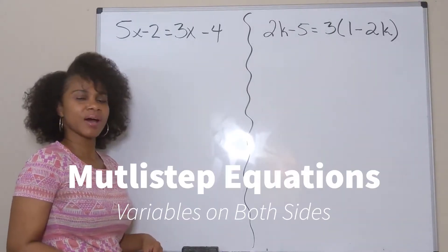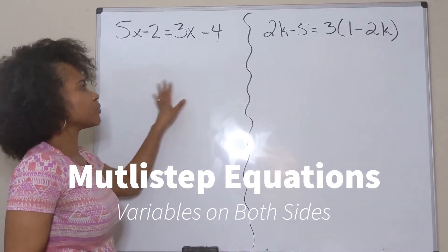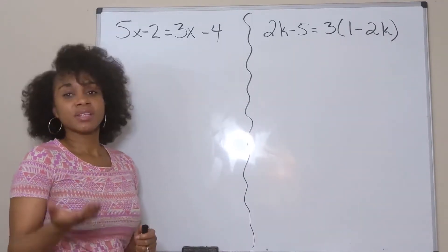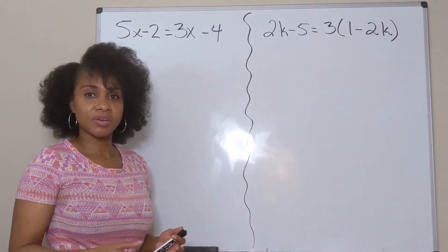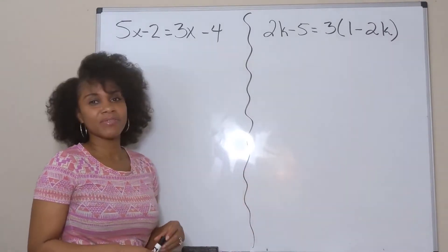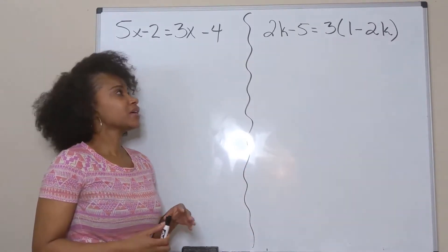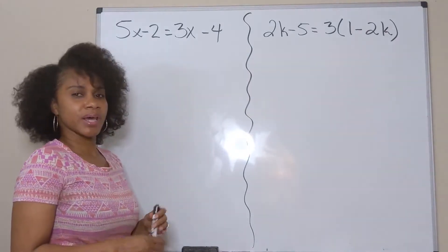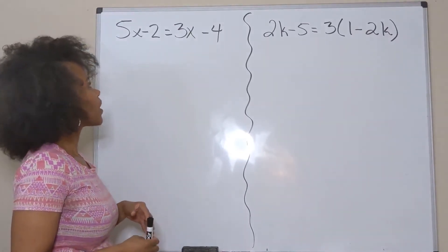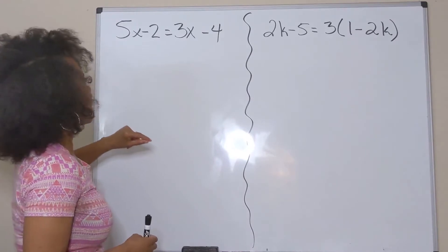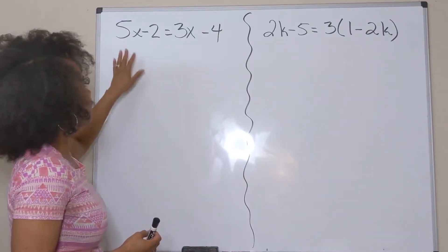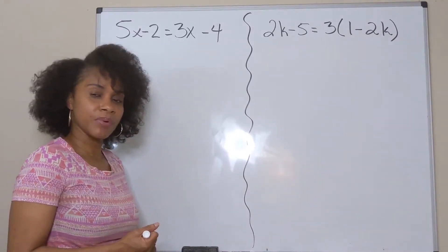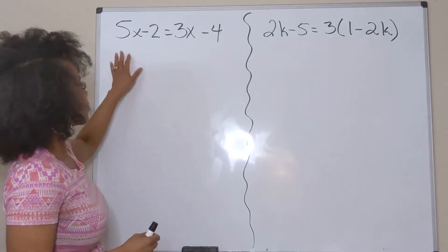Now we're looking at multi-step equations with variables on both sides. In order to solve multi-step equations, you need to have mastered a two-step equation — if you haven't, please see my video on solving two-step equations. With these multi-step equations we're going to do three examples that increase with difficulty. Your goal is to get your variables or combine your like terms by using inverse operations.